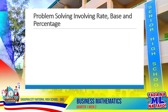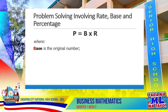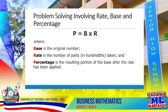Percentage problems are often related to interest, discounts, commissions, and taxes. Problems of this kind usually involve three variables: the rate, the base, and the percentage. In general, the relationship between those variables is determined by the following formula: Percentage equals base multiplied by the rate. The base is the original number, the rate is the number of parts taken, and the percentage is the resulting portion of the base after the rate has been applied.